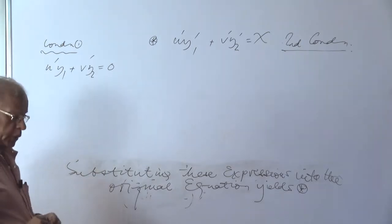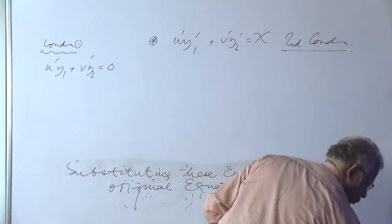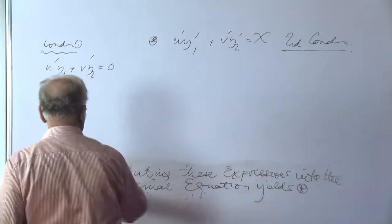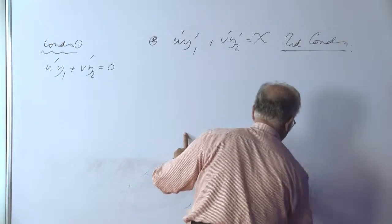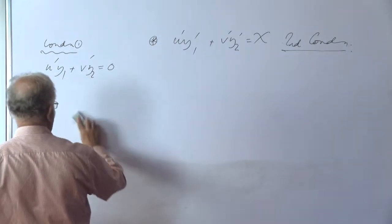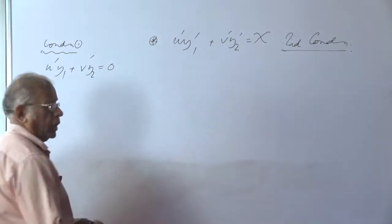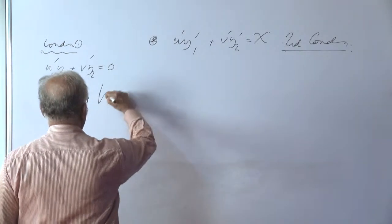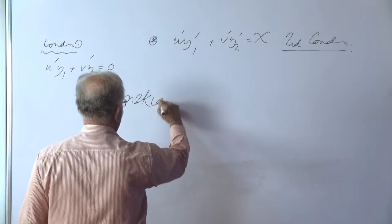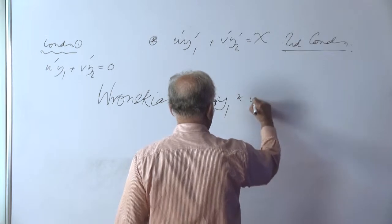We will solve these two equations. Before that, we define something called a Wronskian. Wronskian of y1 and y2. We define a term called the Wronskian. It's written as W-R-O-N-K-I-A-N of y1 and y2.